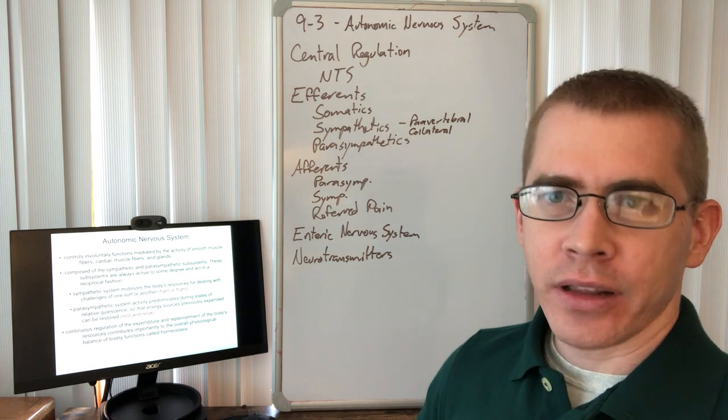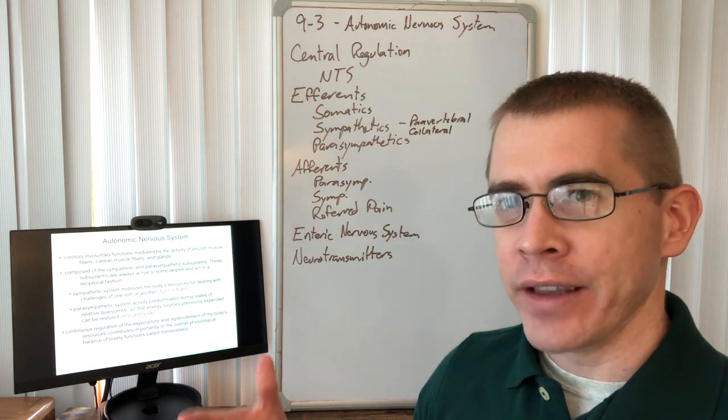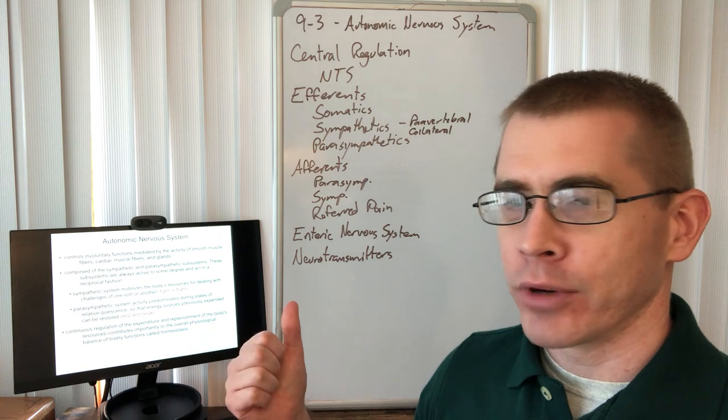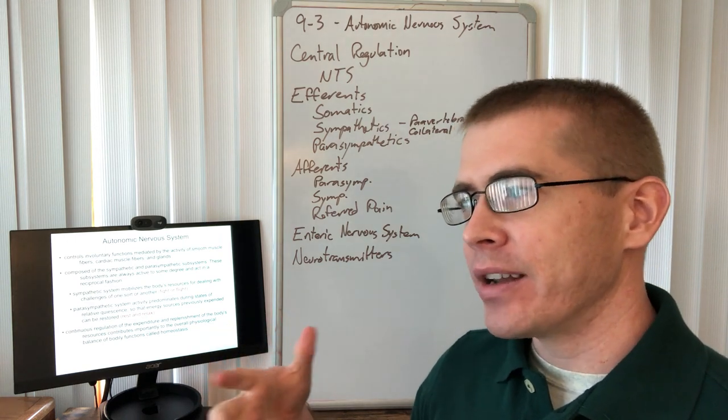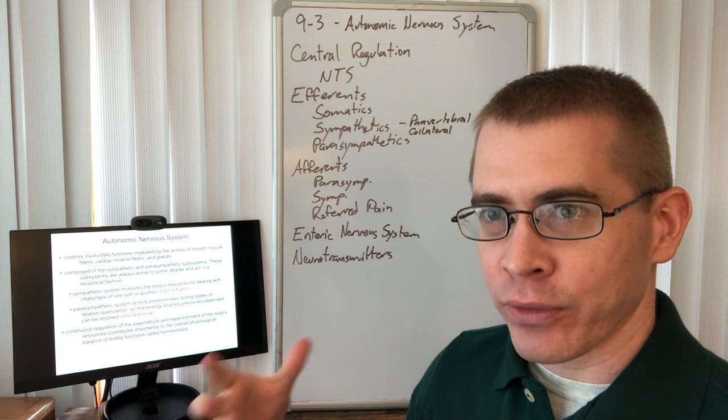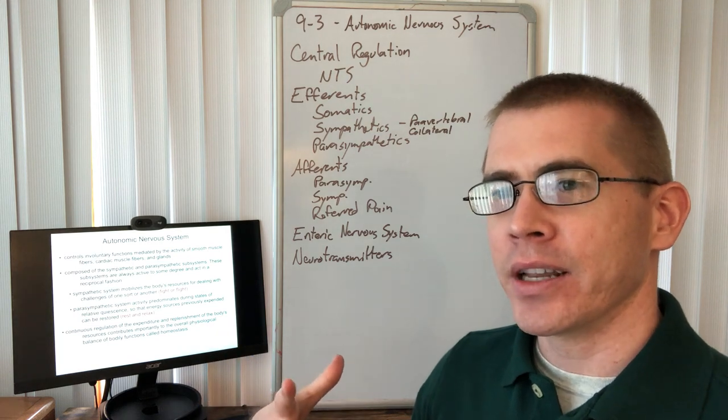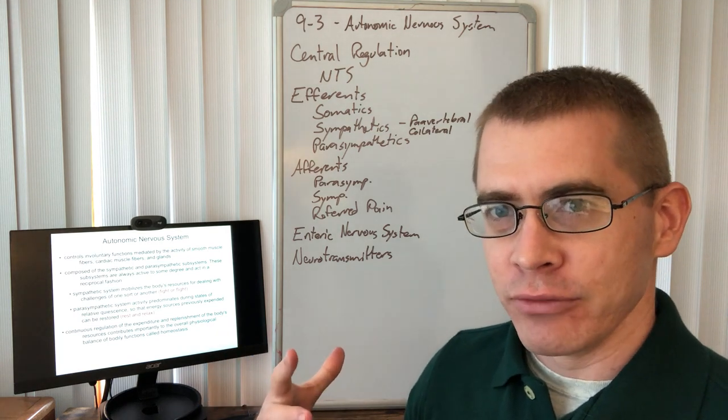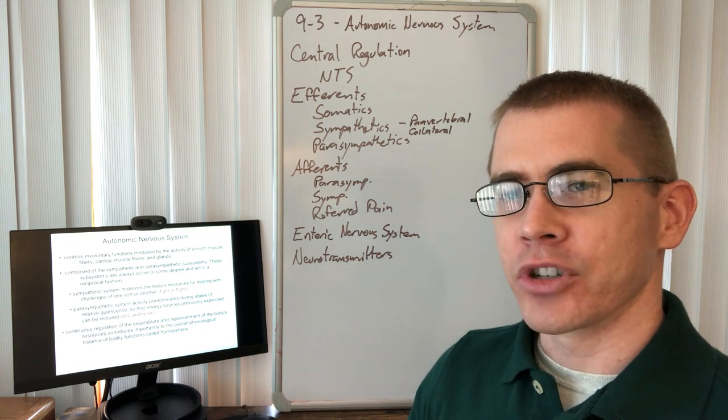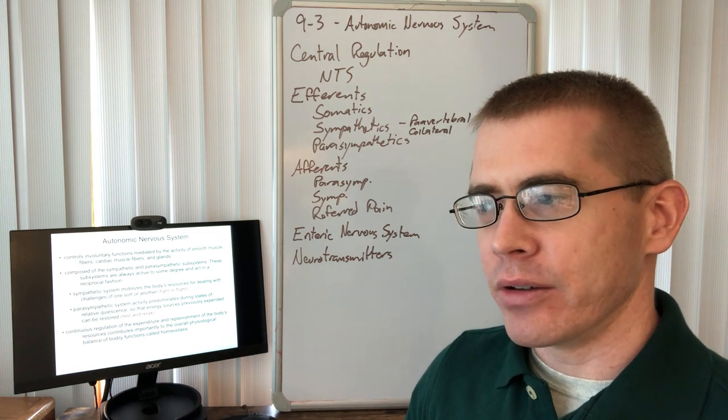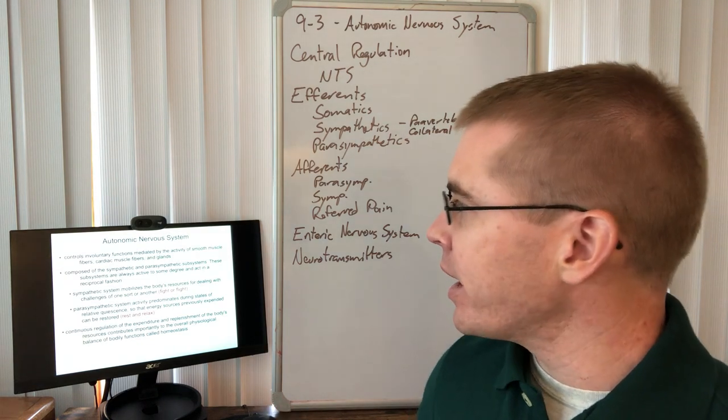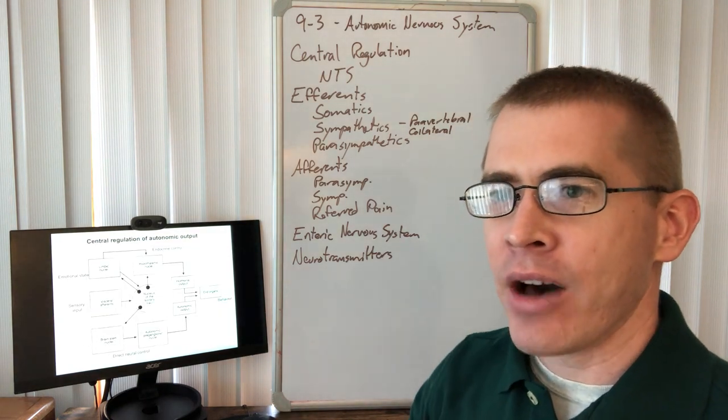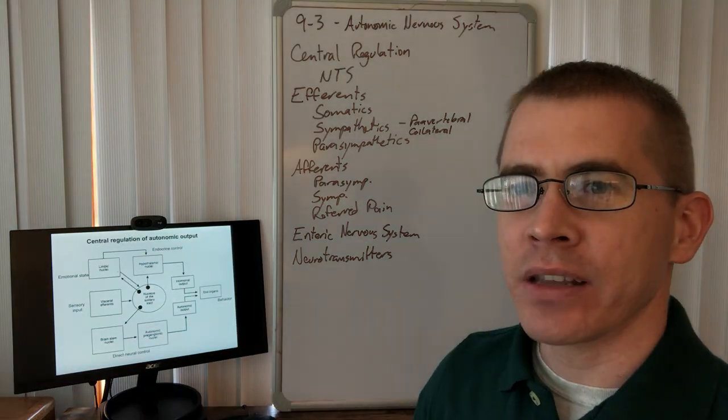The autonomic nervous system regulates the four F's of life: fight, flight, food, and reproduction. The sympathetic is responsible for that fight or flight response, whereas the parasympathetic is responsible for the rest and digest responses that our body naturally undergoes. So we all understand that, but let's take a look at how this system is regulated.